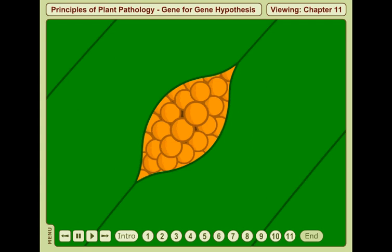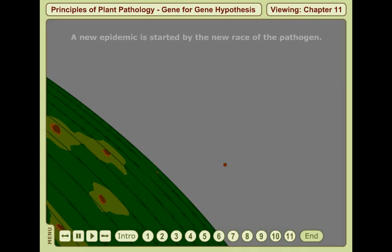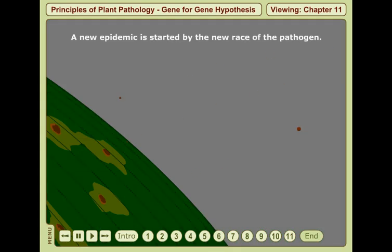Therefore, a new epidemic is started by the new race of the pathogen and a new resistance gene is needed to stop its progress.